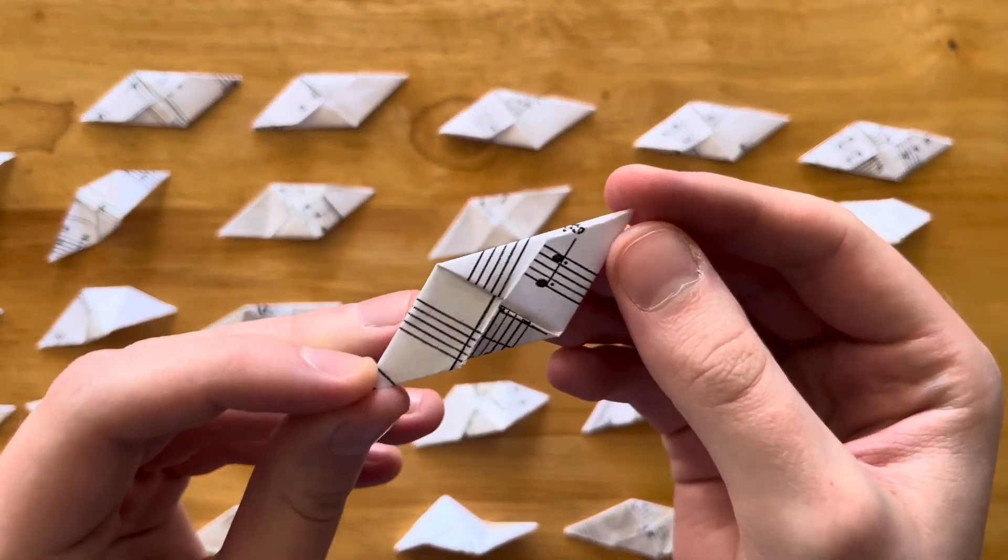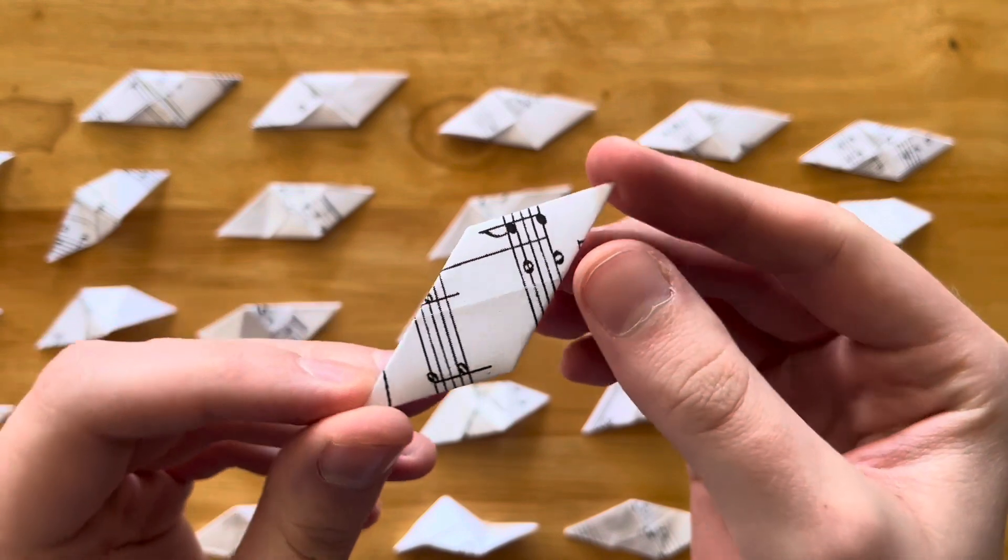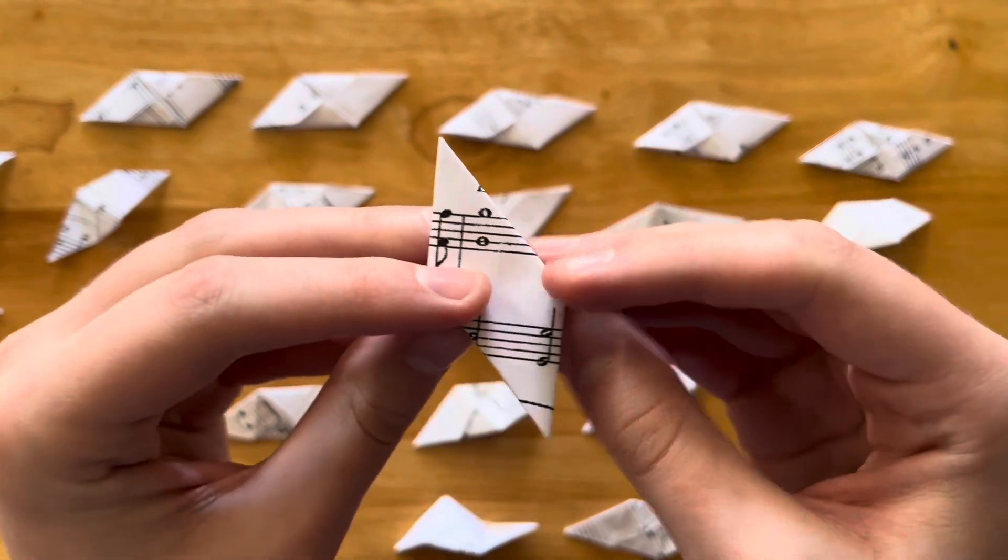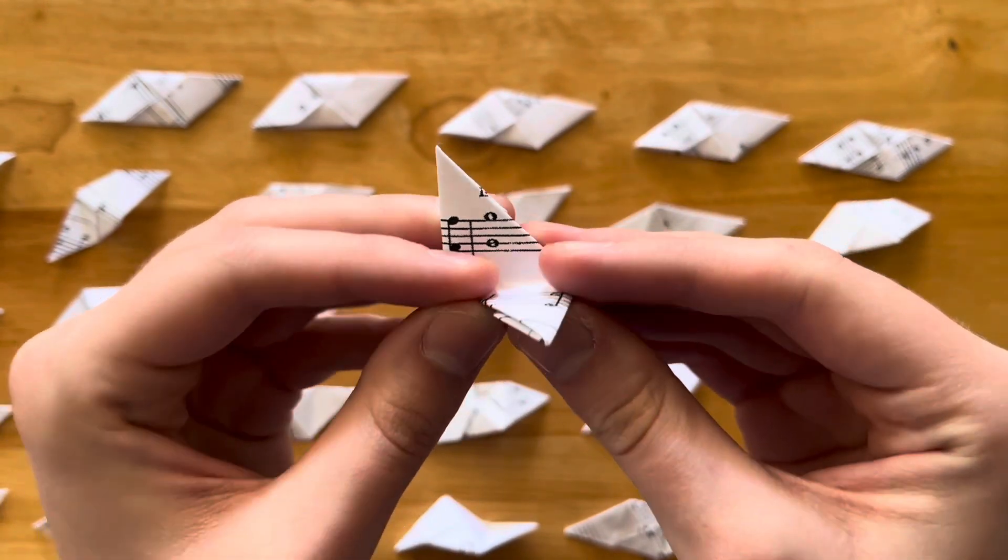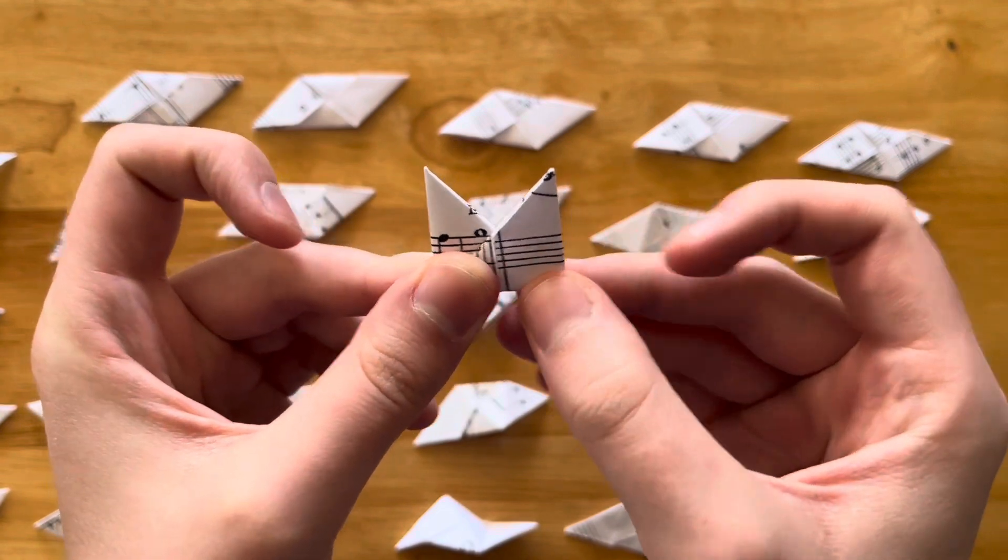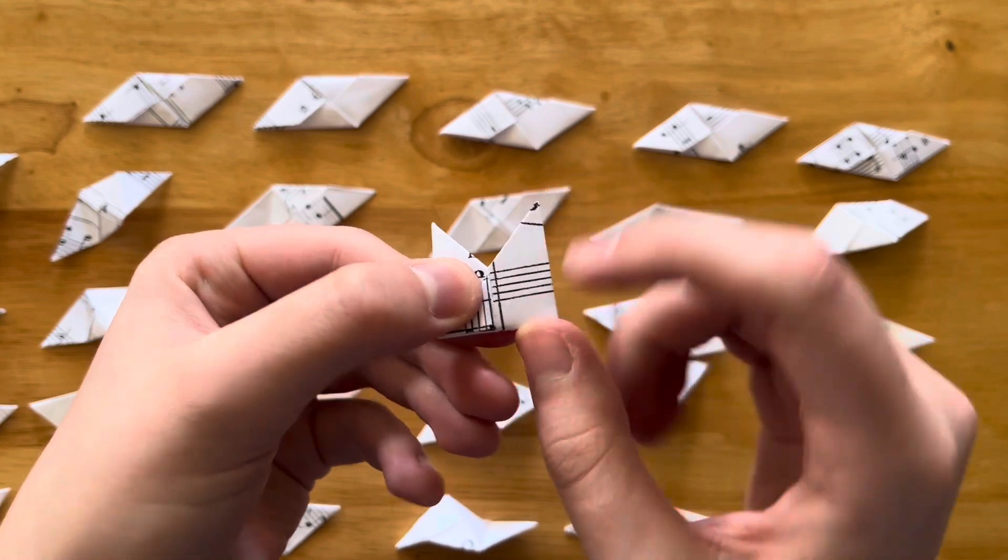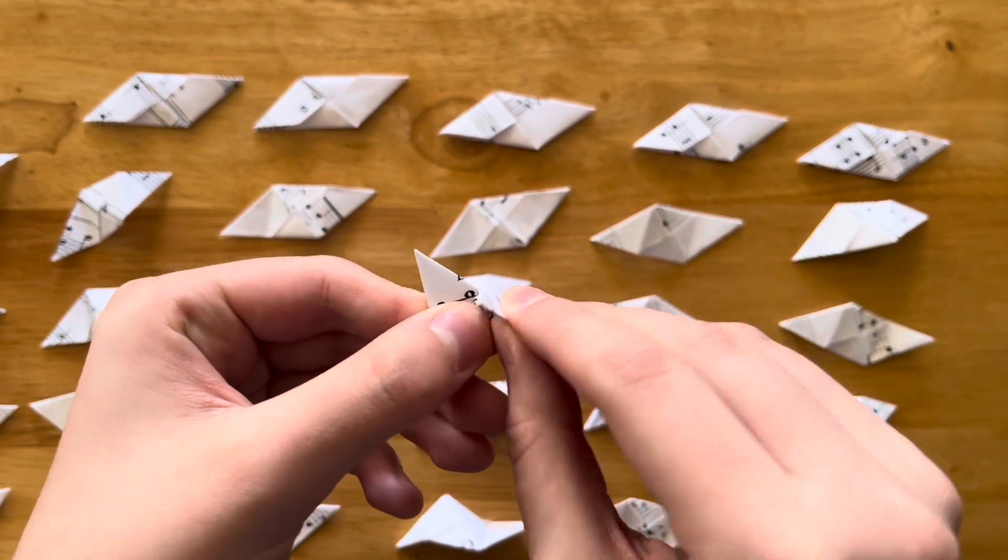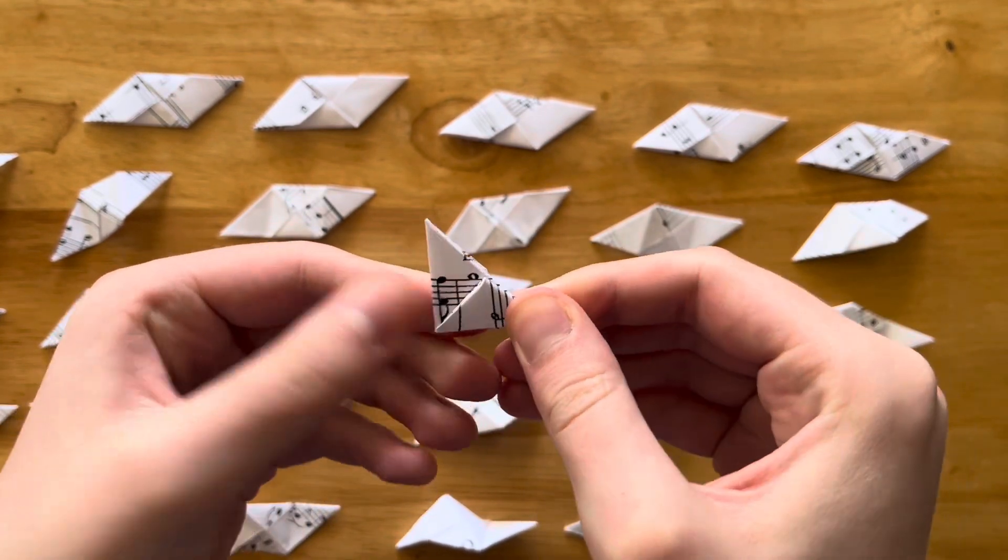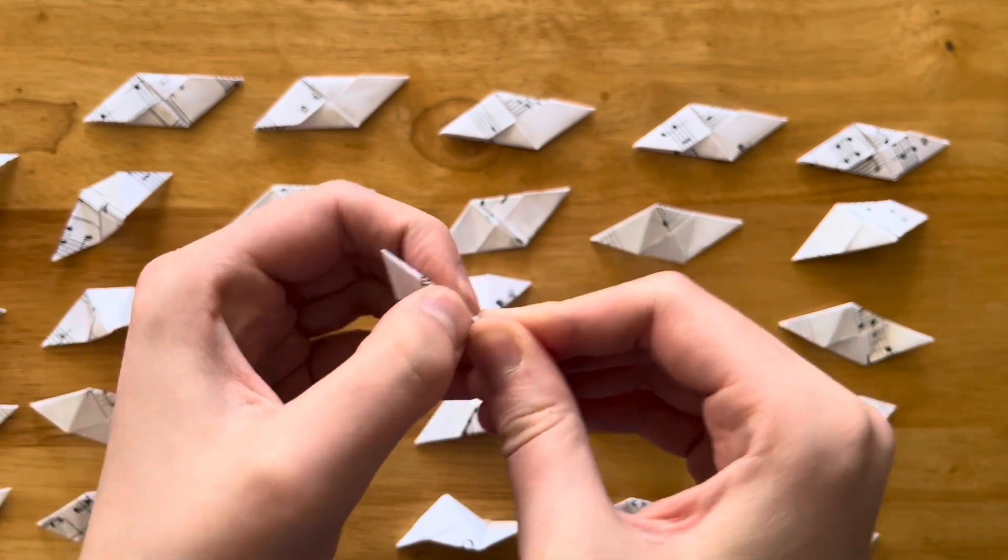We're going to flip it so that the white side is facing you. Then we're going to fold it in half so that it looks like little fox ears. And then we're going to bring the front fox ear down like this. There we go.